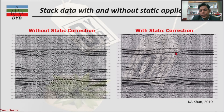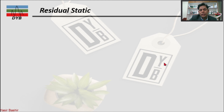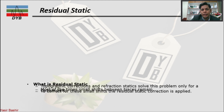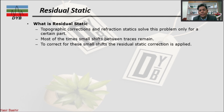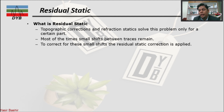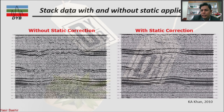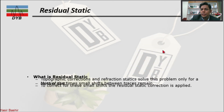Another term is residual static. Once we apply topographic correction and reflection static, it solves the problem only for a certain part — some part is corrected but another part may still remain. Most of the time, small shifts between traces remain in the data. To correct for these further small shifts, residual static is applied. For example, the upper layer may still not be fully resolved after initial static correction, indicating that residual static needs to be applied.